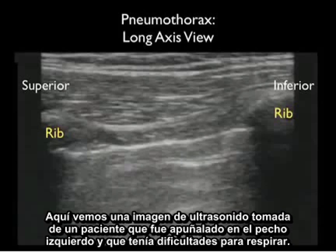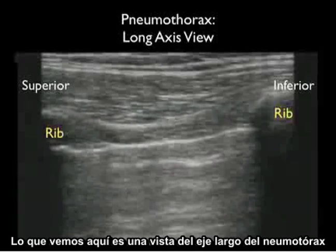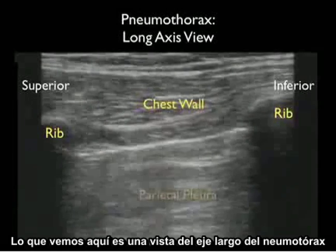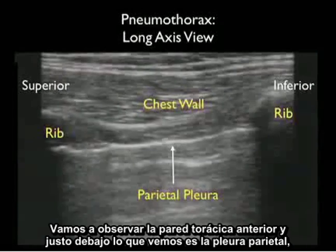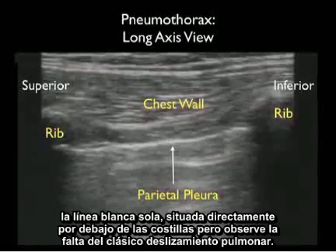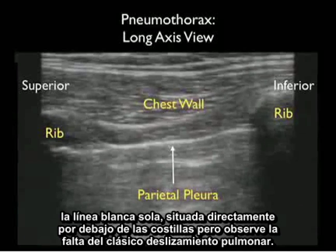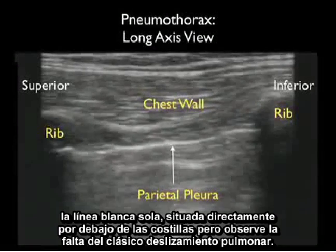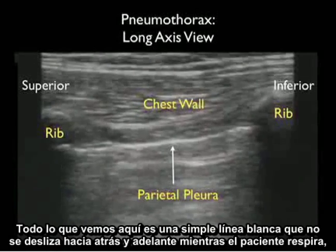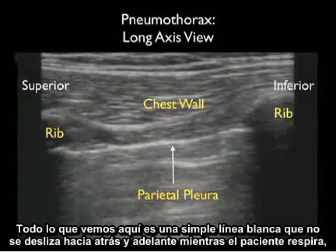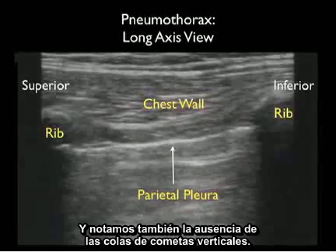Here's an ultrasound image taken from a patient who was stabbed to the left chest and had shortness of breath. What we see here is a long axis view of a pneumothorax. Looking at the chest wall anteriorly, right below that we see the parietal pleura — the single white line located directly inferior to the ribs — but notice the classic lack of lung sliding. All we see is a single white line that fails to slide back and forth as the patient breathes. Notice also the absence of the vertical comet tails.